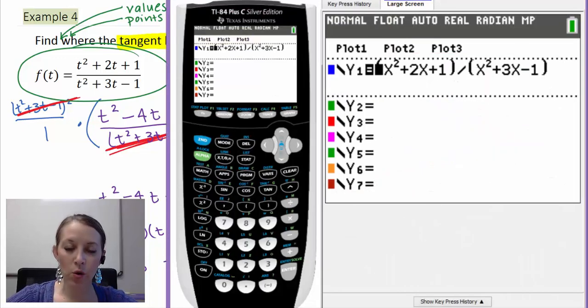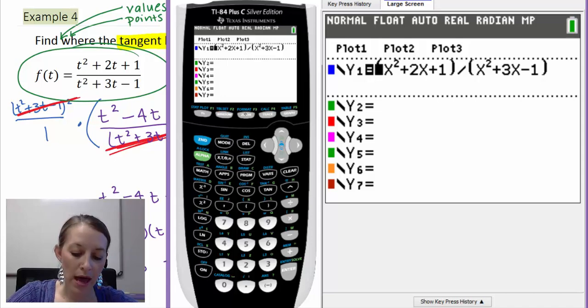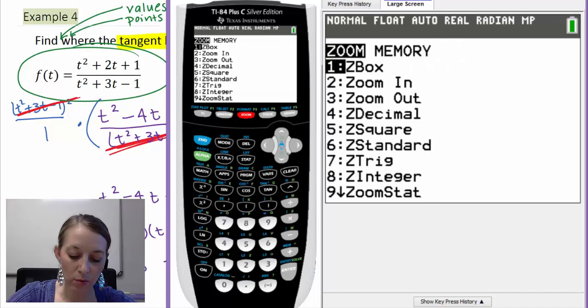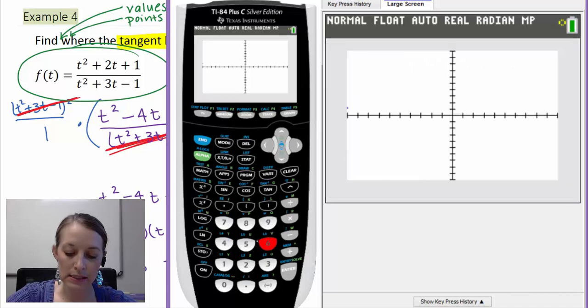I have my original equation typed into my calculator with the exception that I used X's instead of T's. Notice I put my whole numerator in parentheses and my whole denominator in parentheses, so that way I know my calculator is reading it correctly. Let's go ahead and graph this on the normal window. So zoom 6, that gives us the standard window.